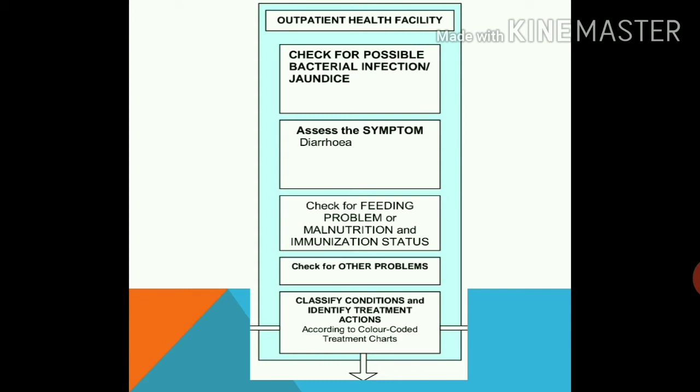This is a flowchart from the IMNCI module for the sick young infant up to two months of age. In the outpatient health facility we check for possible bacterial infection and jaundice, then check for symptoms of diarrhea, then feeding problems, then malnutrition and immunization status, and check for other problems. We then classify conditions and identify treatment actions according to the color-coded treatment chart.